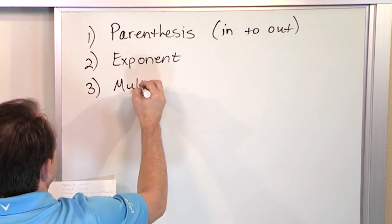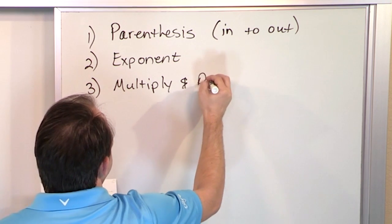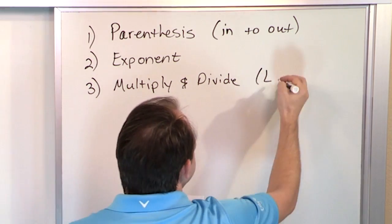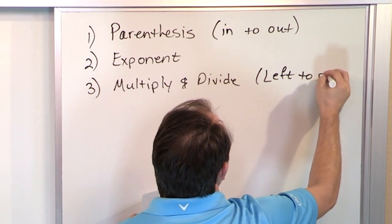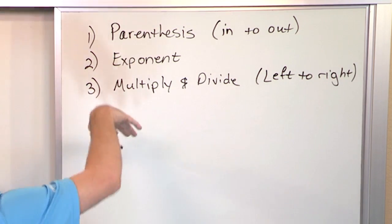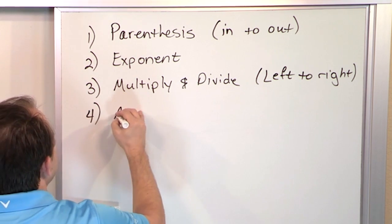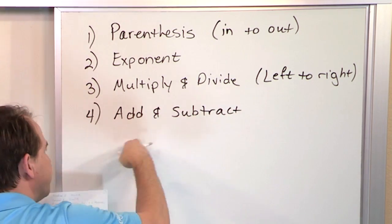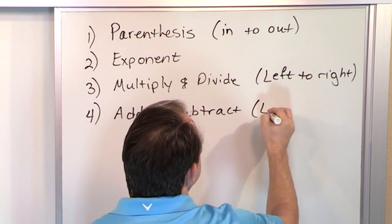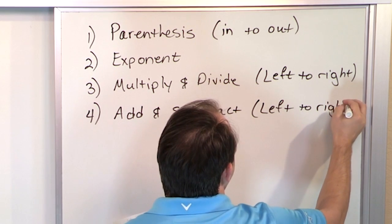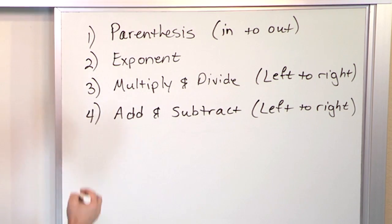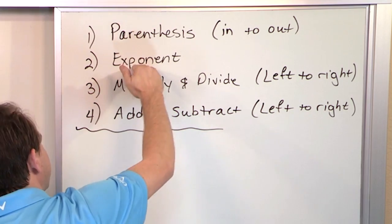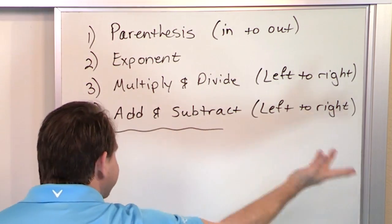Then you multiply and divide. When you do multiplication and division, you do it left to right — if there are multiple things in one line, you work like reading a sentence, left to right. And after you've done all that, if there's anything left, it's only going to be addition and subtraction. So the very last things you do are add and subtract, and again, if you have multiple additions or subtractions, you go left to right. So: parentheses, exponents, multiply, divide left to right, add, subtract left to right — that's basically all there is to it.